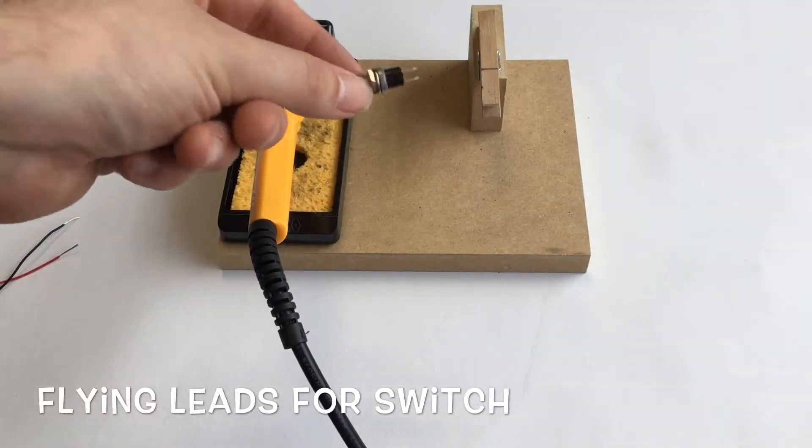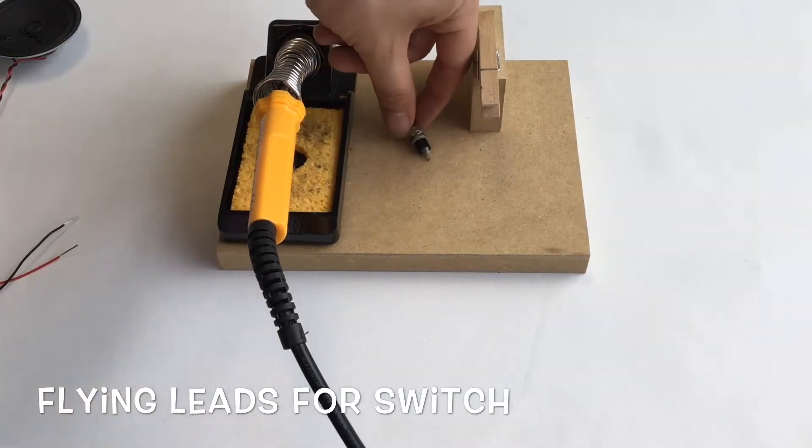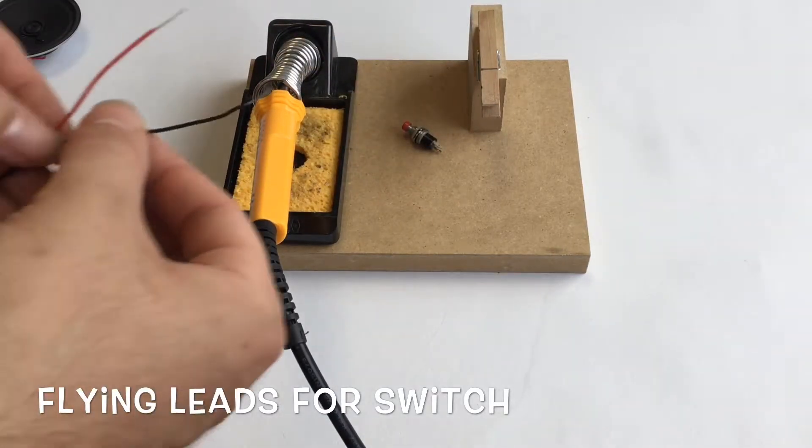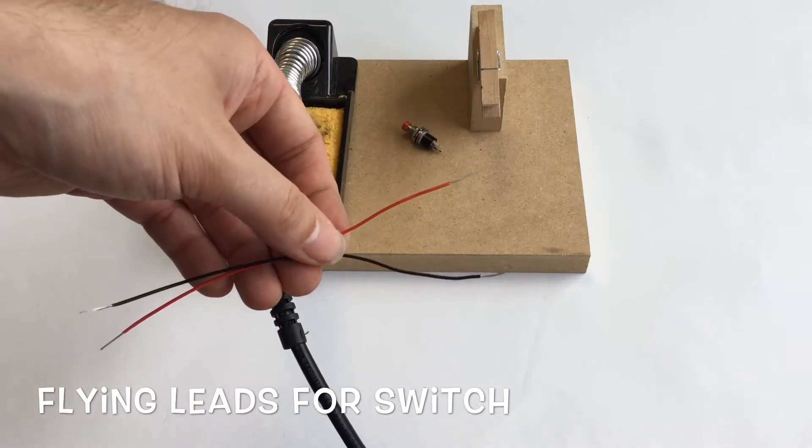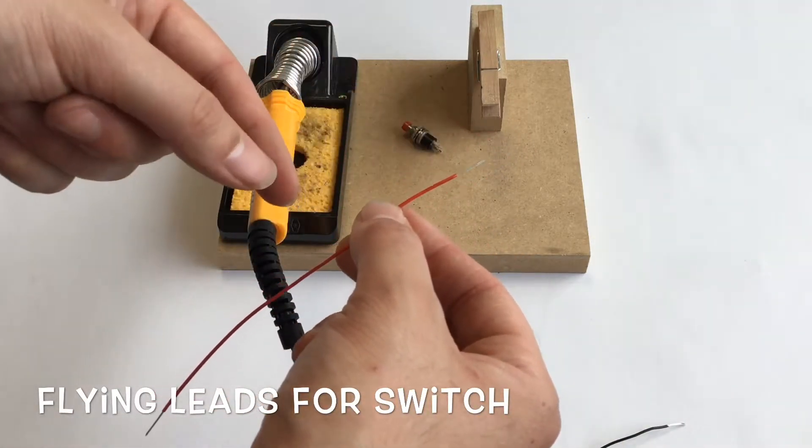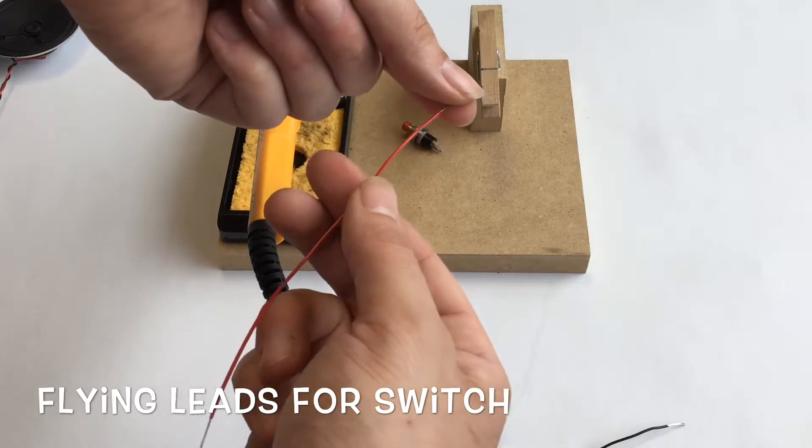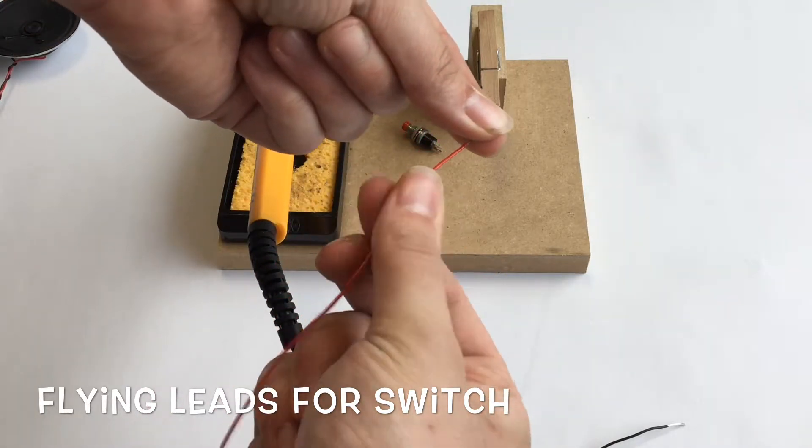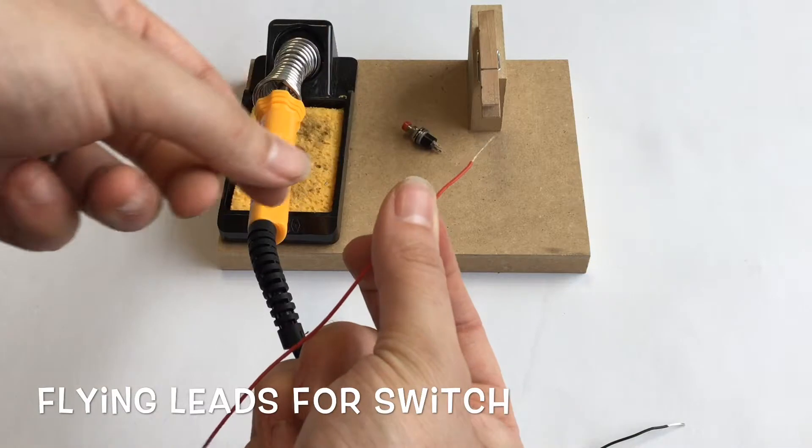The next component that will need flying leads is the switch. Again, we're going to need, like the LEDs, two pieces of wire. It may make sense, after stripping, to make sure the strands are twisted together. Pinch the strands together, and twist the wire with the other hand, and that will ensure they stay together.